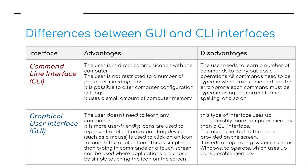Let's go over the differences between a GUI and a CLI interface. The advantages of a command line interface: the user is in direct communication with the computer, the user is not restricted to a number of predetermined options, it is possible to alter computer configuration settings, and it uses a small amount of computer memory. Whereas a graphic user interface: the user doesn't need to learn any commands — it is more user friendly. Icons represent applications, and a pointing device such as a mouse or trackpad is used to click on an icon to launch the application. A touch screen can also be used, where applications are chosen by clicking on the icon with your finger, a stylus or an Apple Pencil.